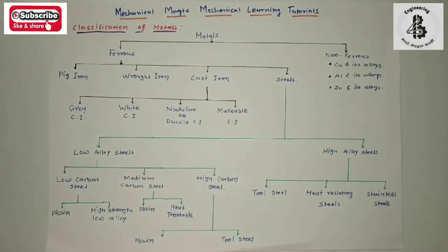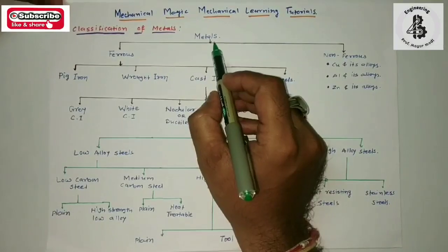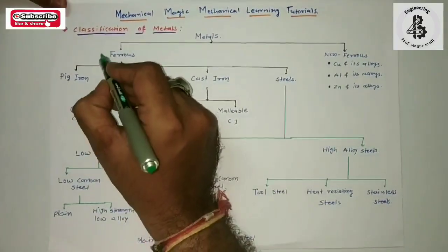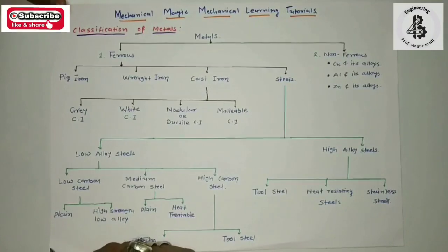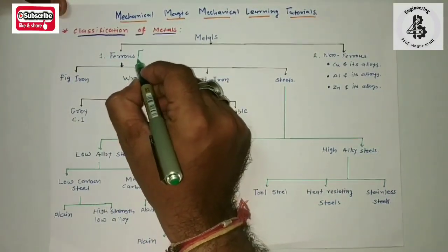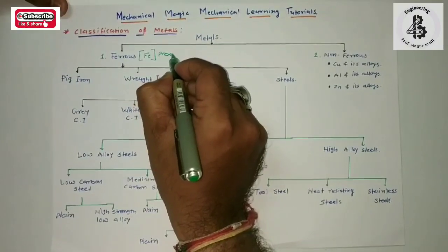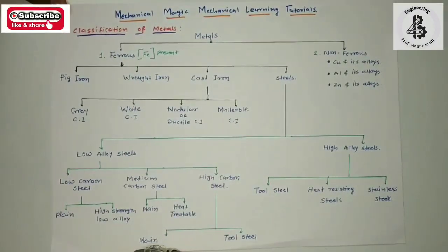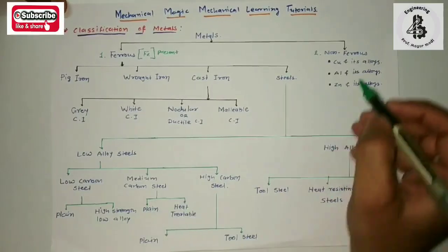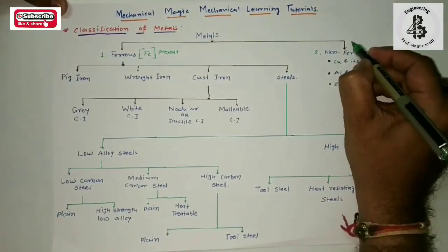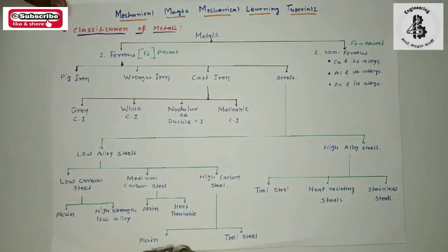So let us see the classification of metals. Metals are basically classified into two categories: first, ferrous materials, and second, non-ferrous materials. In the case of ferrous materials, if Fe — or iron — is present, that category of materials is called ferrous materials. In simple terms, they will be attracted by magnets. In the case of non-ferrous materials, Fe is absent from the composition.